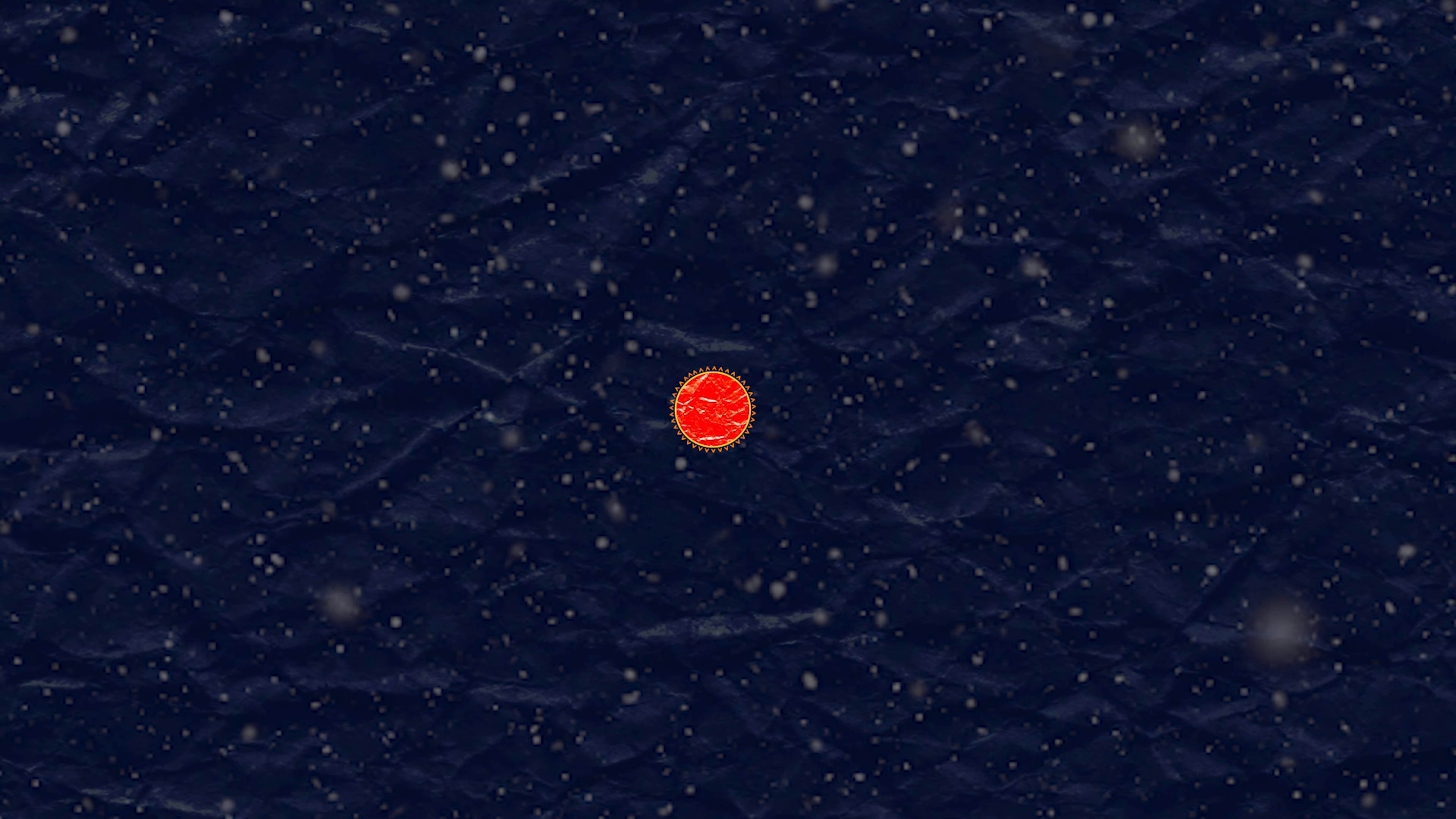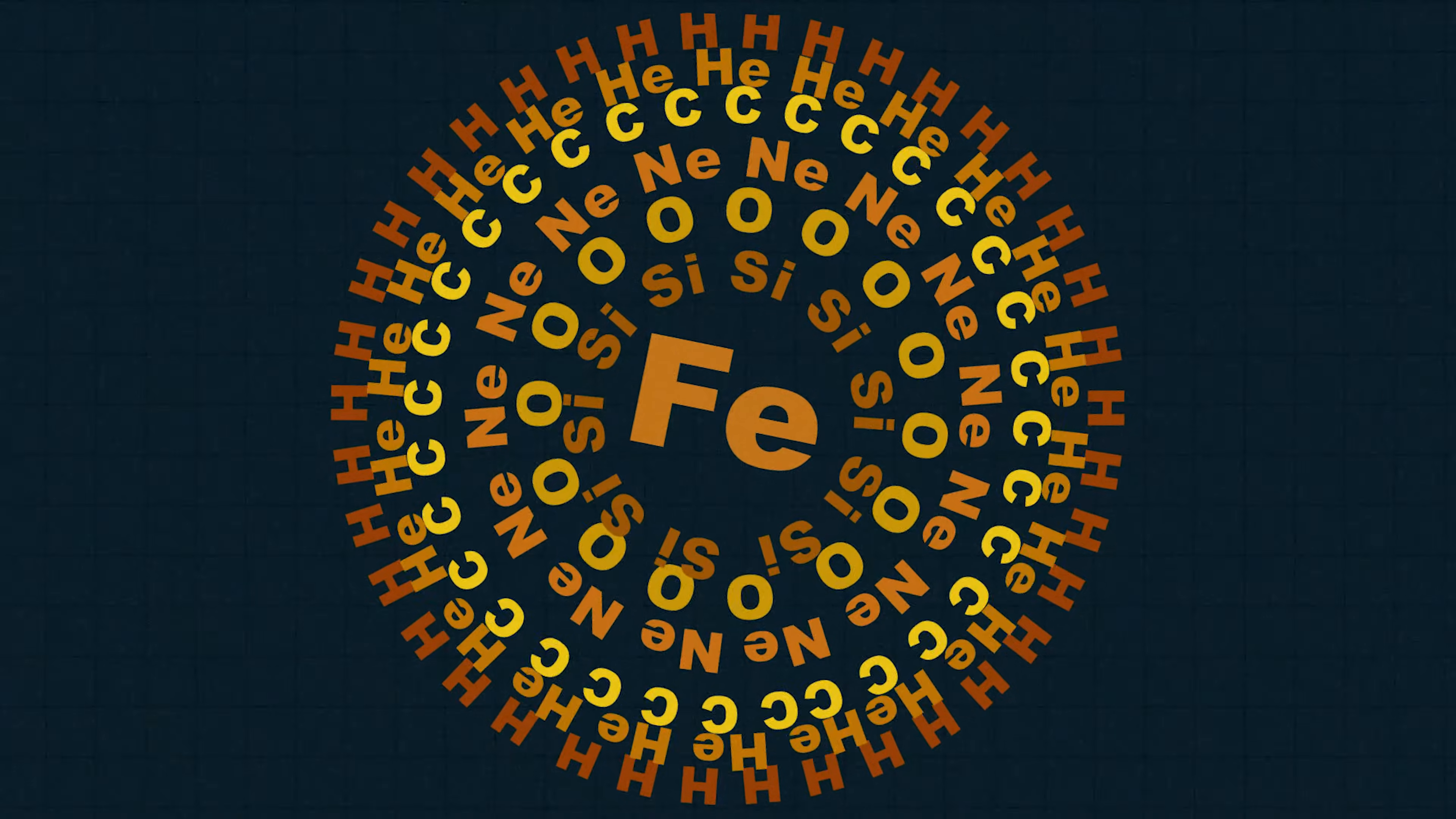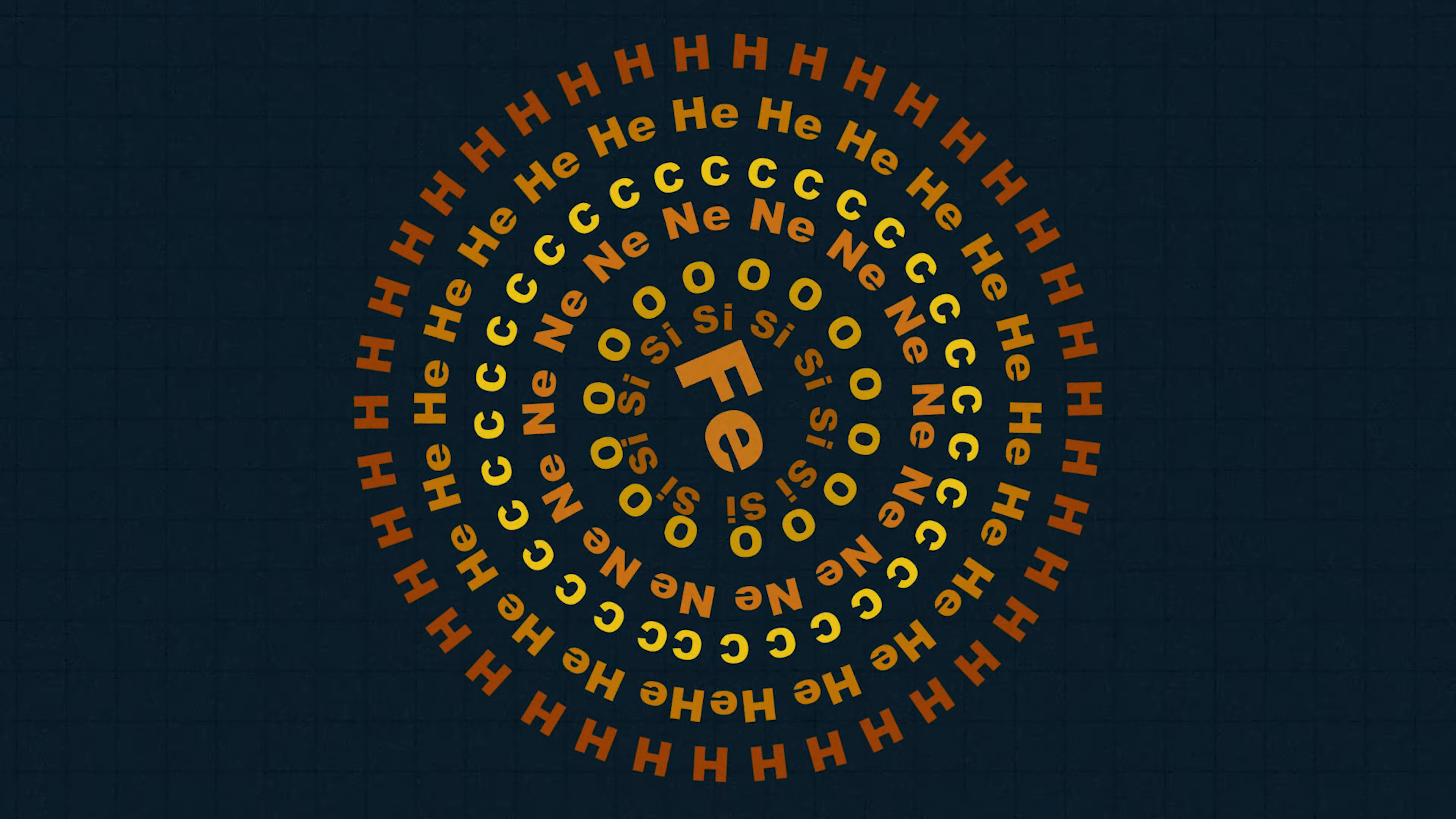The extremely high heat creates heavier elements. Fusion occurs inside of stars until they reach iron, which is the limit, because there are not enough neutrons in the stars' cores to continue.